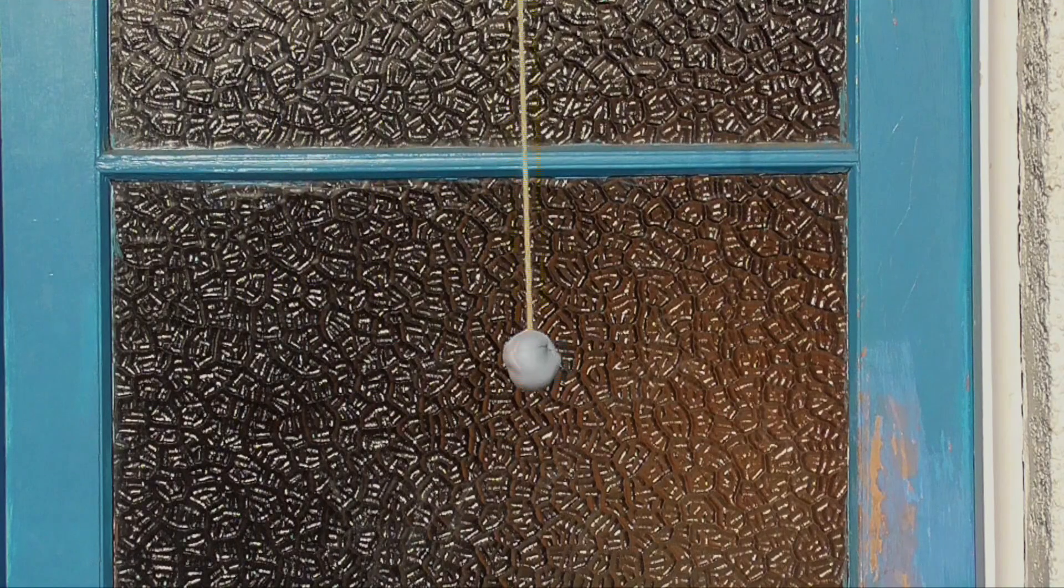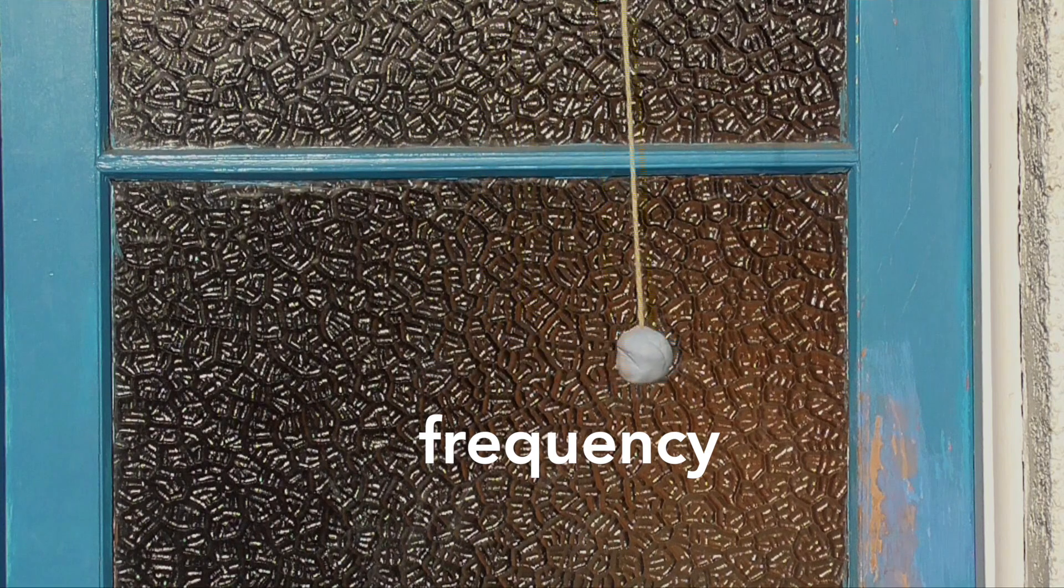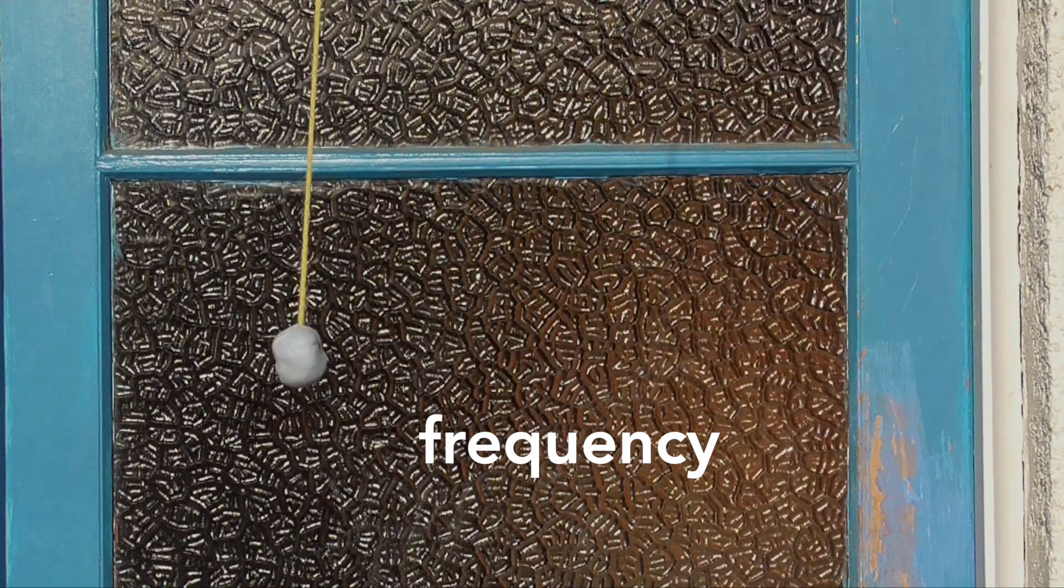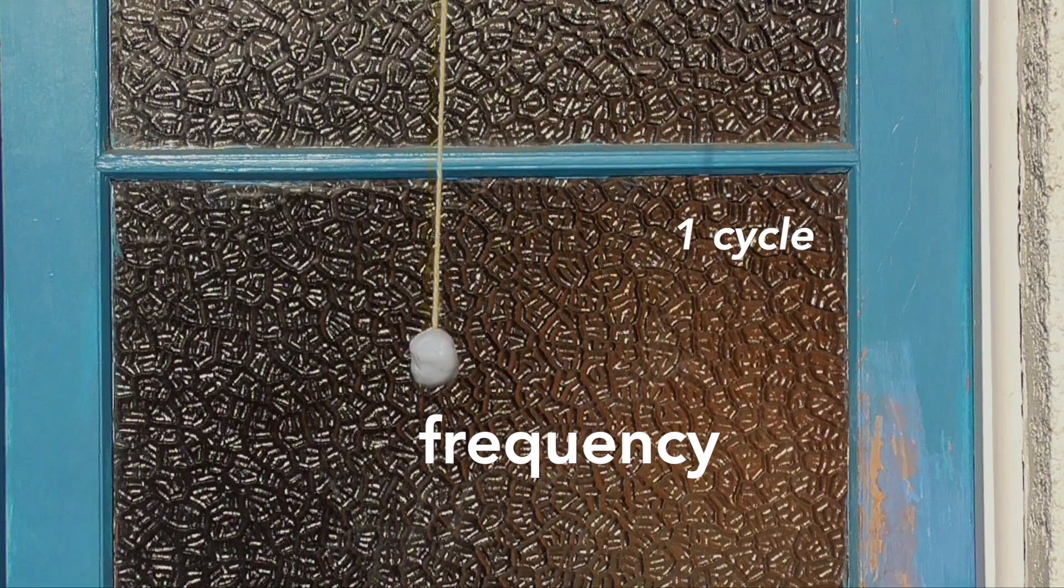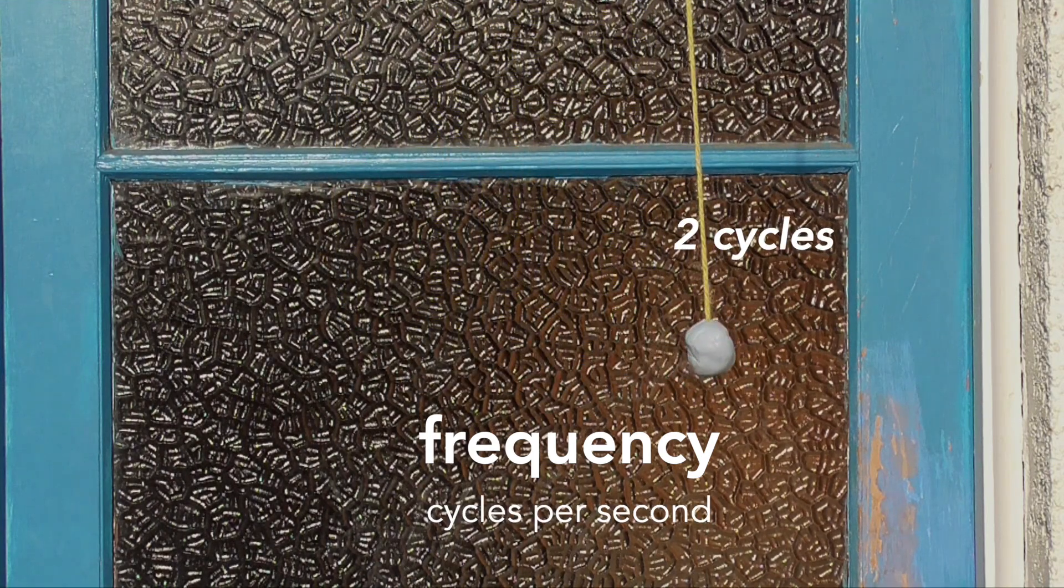Whenever something oscillates, it does so with a certain frequency. A pendulum swings one way and then the other. When it swings back to its starting position, it has completed one cycle. The frequency refers to the number of cycles completed in one second.